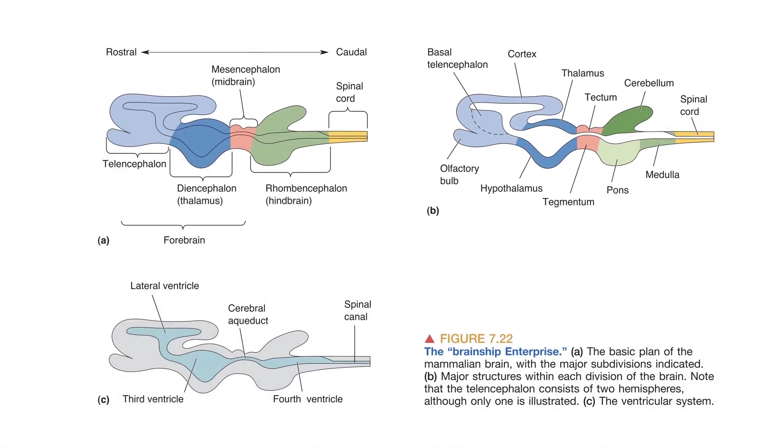The paired hemispheres of the telencephalon surround the lateral ventricles. Dorsal to the lateral ventricles, at the surface of the brain, lies the cortex. Ventral and lateral to the lateral ventricles lies the basal telencephalon. The lateral ventricles are continuous with the third ventricle of the diencephalon. Surrounding this ventricle are the thalamus and hypothalamus.